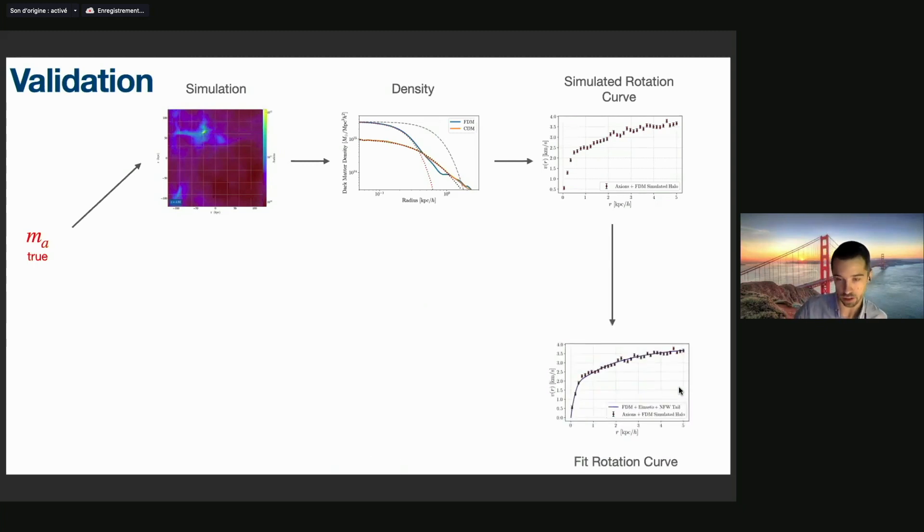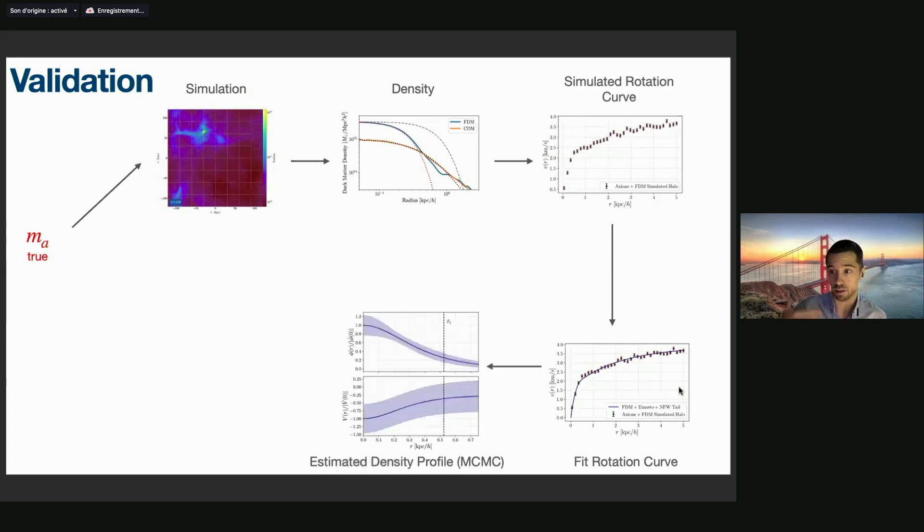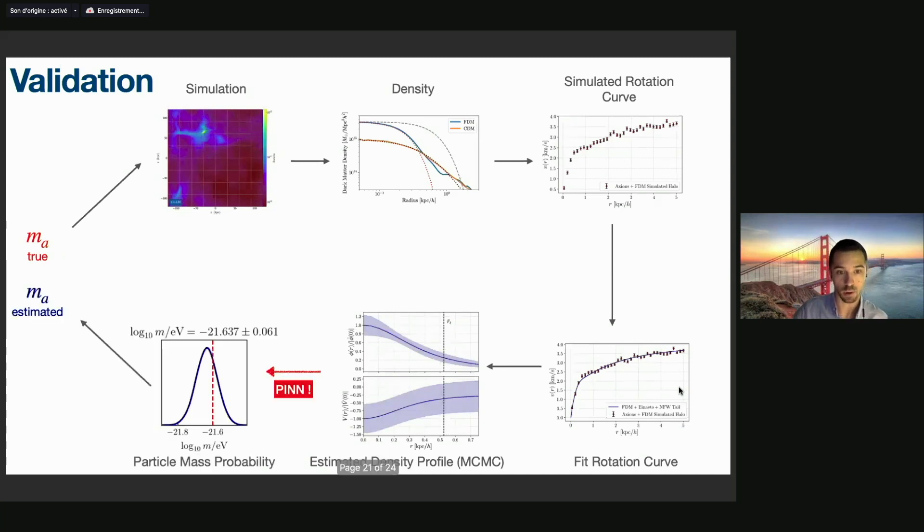So I start by fitting the rotation curve and start solving the inverse problem. Then using a simple MCMC sampler, in this case was nested sampling but the method itself is not that relevant, I get a set of different phi functions and v functions that could fit the data within the error bars. For each of these samples I run the physics-informed neural network, and then I bin each of the mass that I get. Every time I run this PINN, I will note here that the PINN method is extremely fast, it can be embedded in an MCMC sampler. From this I get a posterior distribution on the particle mass. This time, because there is error in the data, of course there will be some spread to that distribution. We know that in the perfect case where the error bars are zero, we get exactly the mass back.